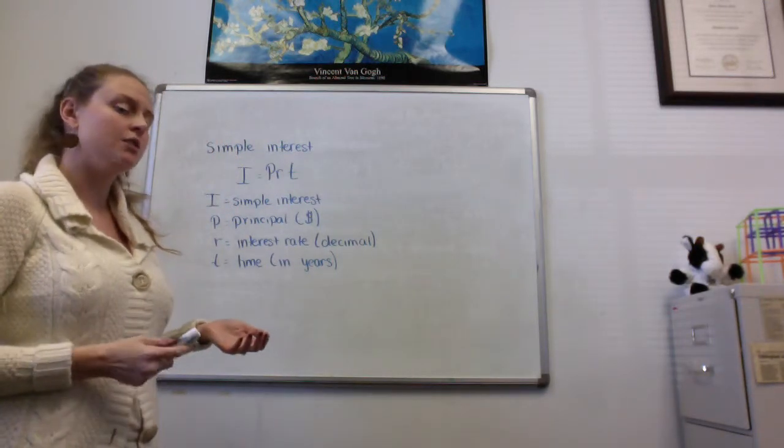And our last variable is T. This stands for time. And I'm going to want to write that in years. So sometimes it will be given to me in years, and I would just plug that number in. Or it might be given to me as 24 months, and then I would write 2 years.